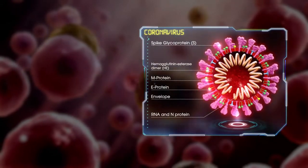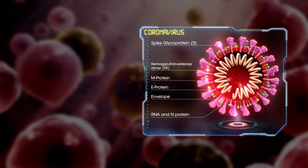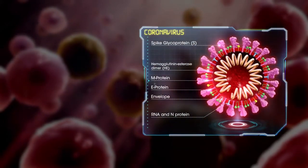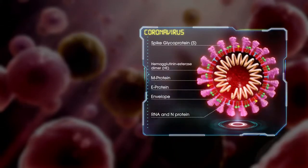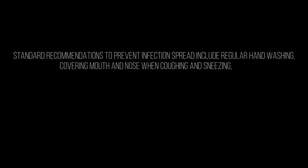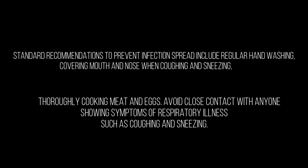A protein encapsulates the genetic material, known as the viral envelope. On the surface of the viron are S, H, and E proteins. The structure of the 2019 novel coronavirus is a mutation.